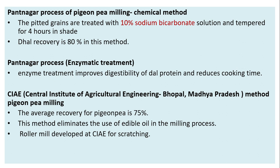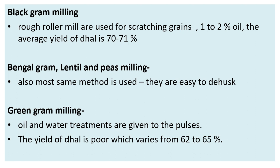CIAE (Central Institute of Agricultural Engineering) is situated in Bhopal, Madhya Pradesh. CIAE method of PGNP milling: the average recovery is 75 percent, and this method eliminates the use of edible oil in the milling process. Roller mills developed at CIAE for scratching are also used for black gram milling — rough roller mills are used for scratching grains with one to two percent oil, giving an average yield of dal at 70 to 71 percent.